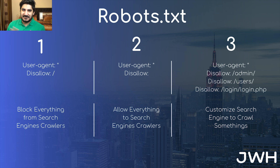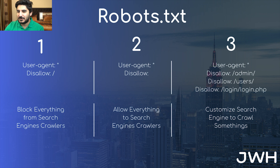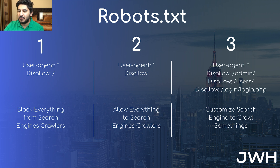We have three cases. In the first case we have written 'User-agent: *' and on the second line we have written 'Disallow: /'. User-agent means whichever crawlers or robots we are referring to. The second line says they are not allowed to crawl any URL — the forward slash refers to the whole website. So the rule means search engines cannot access or crawl any URL.